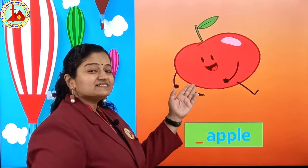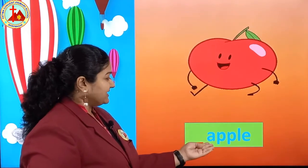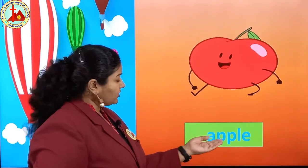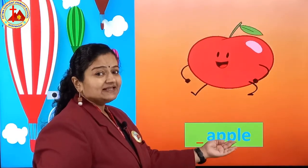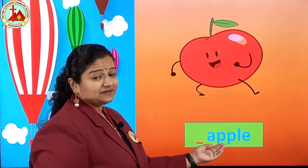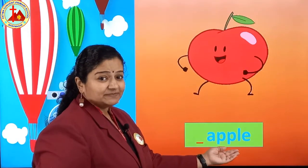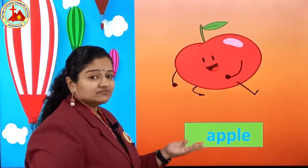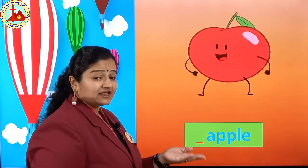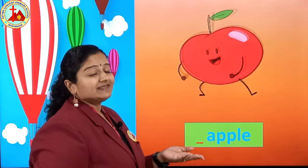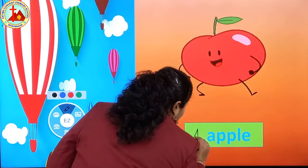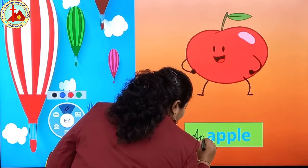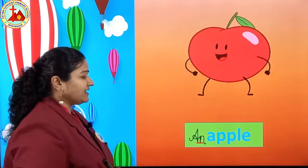Next picture is apple. Apple spelling — come on, you read. A, double P, L, E — apple. Before apple, before A, what will come — A or AN? Think and give me the correct answer. Very smart — AN. Write cursive capital A and from A directly write: an apple.